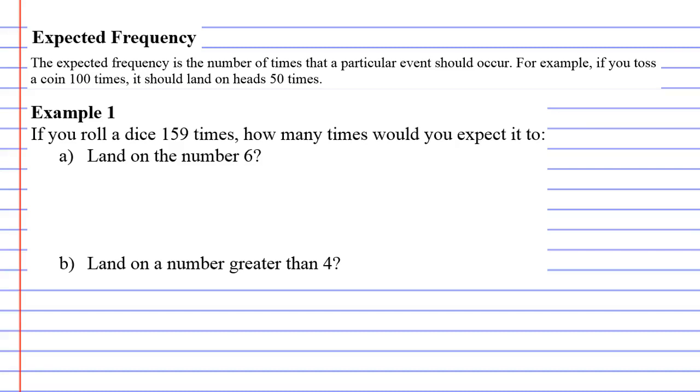In example one, if you roll a dice 159 times, how many times would you expect it to land on the number 6? First, think about what is the probability that the dice will land on the number 6. It's a 1 in 6 chance that it will happen.